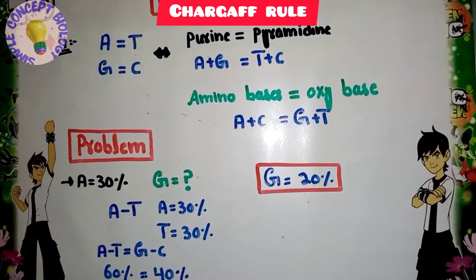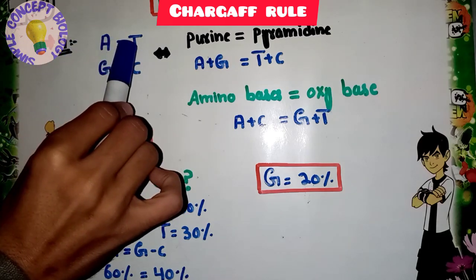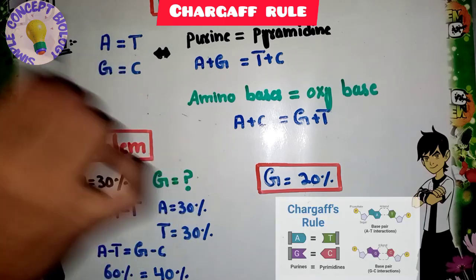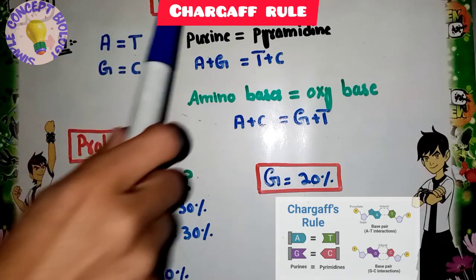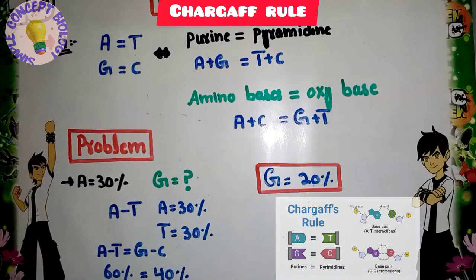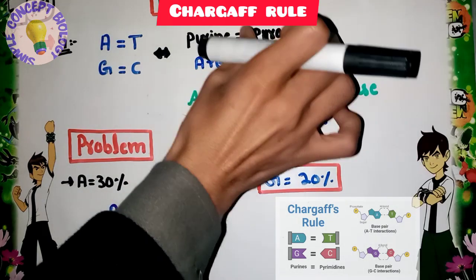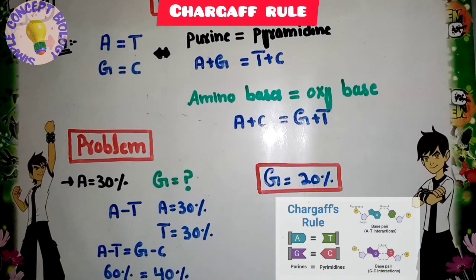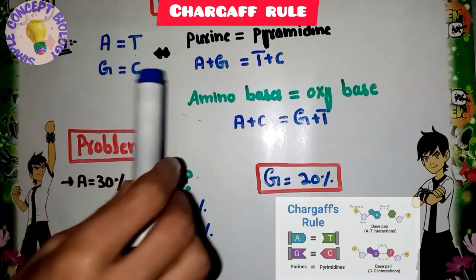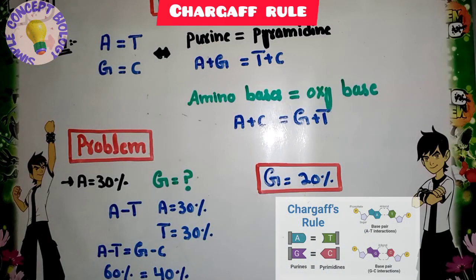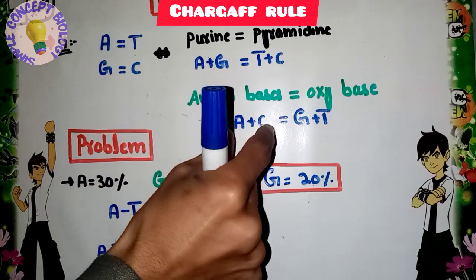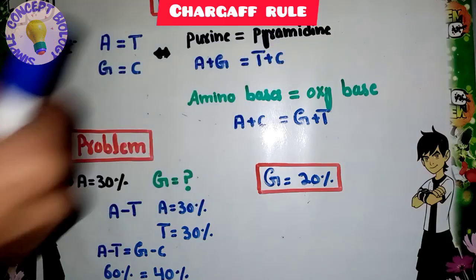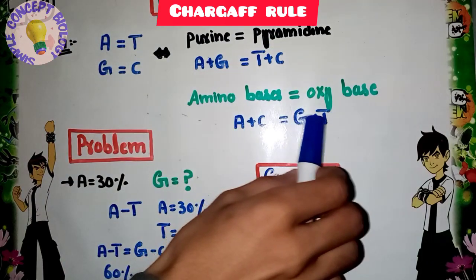The fourth point is the most familiar statement of Chargaff's rule: the number of adenine is equal to thymine, and the number of guanine is equal to cytosine. He also stated that the purine content — adenine and guanine — is equal to the pyrimidine content — thymine and cytosine. Additionally, the amino bases (adenine and cytosine) are equal to the oxy bases (guanine and thymine).